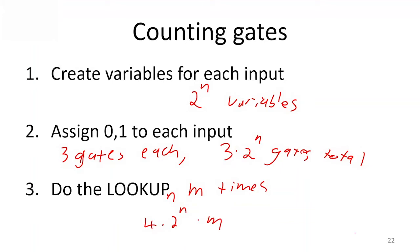So the number of gates total that we're going to need in order to do this is 3 times 2 to the n for assigning the values to all the variables, plus 4 times 2 to the n times m.